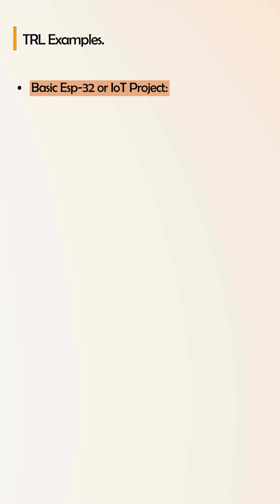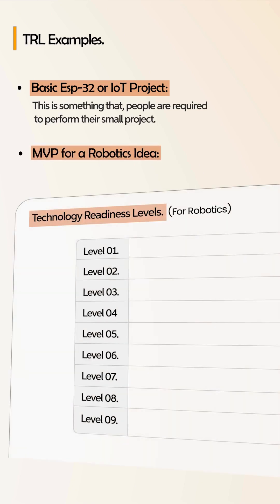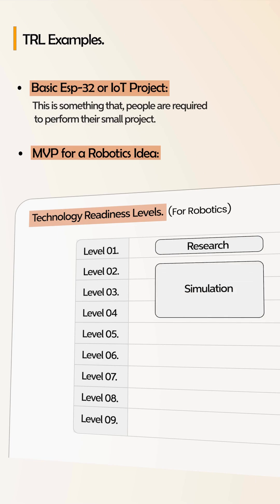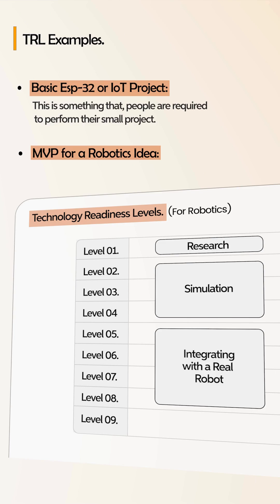You start with a basic ESP32 robot or IoT project — this is something that people are required to perform for their small projects. Then comes the MVP for a robotics idea that you research at TRL 1, then you start doing simulation at TRL 2, 3, 4, and then you start integrating with the real robot at TRL 5, 6 and above. TRL 9 is something production grade.